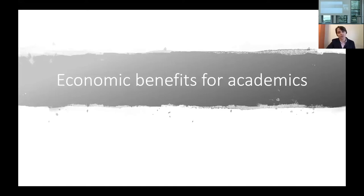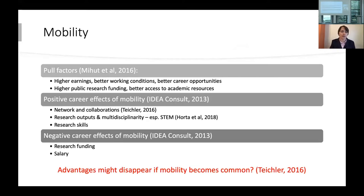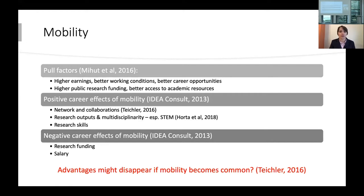Now let's talk about academics, because you need academics for internationalization and you need to show them the benefits, including economic benefits. For academics there is a mirror with students: academics are also mobile for economic reasons — higher earnings, better working conditions, better career opportunities, better funding, and access to better academic resources. It has also been shown that mobility for academics has positive effects on your career, including better networks and collaboration, more research outputs, and higher likelihood of being interdisciplinary, especially in STEM fields. It also improves research skills. Unfortunately, there are also some negative career effects: mobility doesn't necessarily improve your likelihood of getting research funding and might actually decrease it for national research funding.